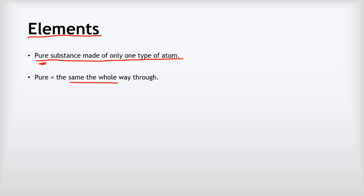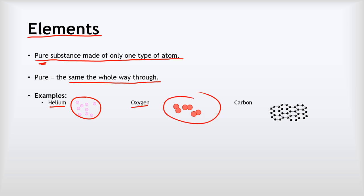Okay, so we've seen about atoms and molecules. Now it's time to talk about elements. Now elements are pure substances made up of only one type of atom. And by this word pure, what we mean is that something is the same the whole way through. Okay, so to look at some examples, we've got helium made up only of these pink atoms here, we've got oxygen made up only of these red atoms here, and carbon made up only from these black ones. Now, it doesn't matter that our carbons here are all joined together. And it doesn't matter that some of our oxygens are joined together, they've still only got one type of atom in them. So they still count as an element.